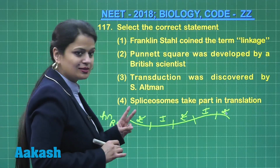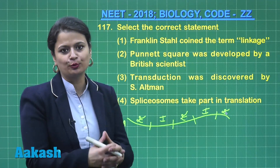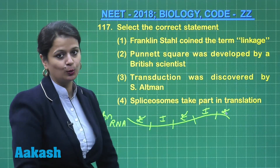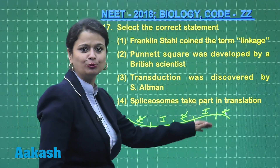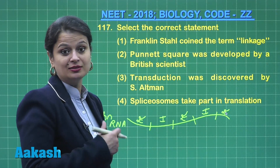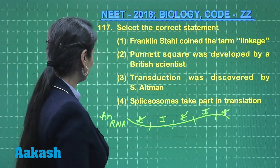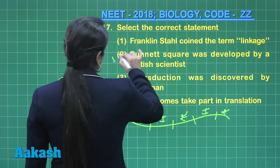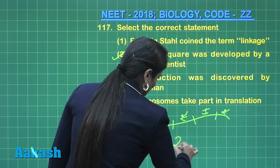HN RNA, or heterogeneous nuclear RNA, has two types of sequences: exons and introns. Exons represent the part of RNA that can code for protein, while introns represent non-coding sequences. These introns need to be removed, and removal of introns is done with the help of an enzyme complex called the spliceosome. The right answer for question 117 is option number two.